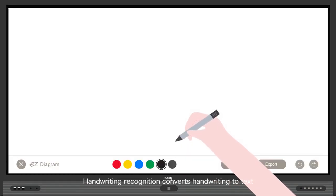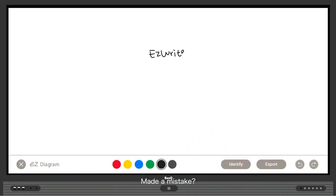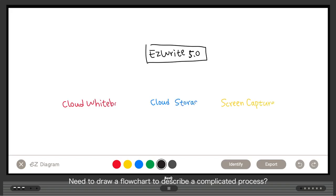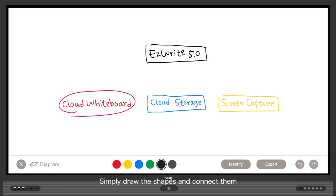Handwriting recognition converts handwriting to text. Made a mistake? No problem. Simply cross out any mistakes. Need to draw a flow chart to describe a complicated process? Simply draw the shapes and connect them. Easy.